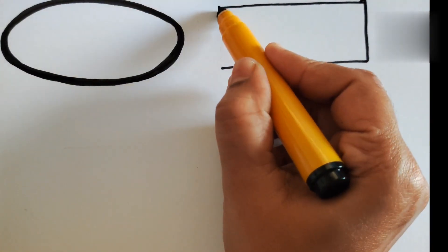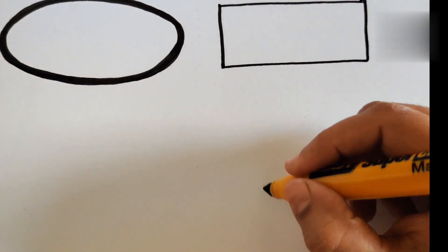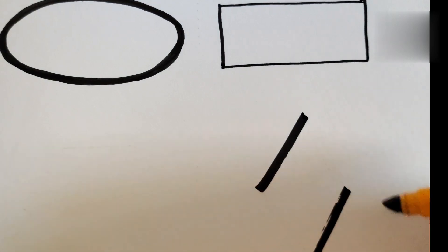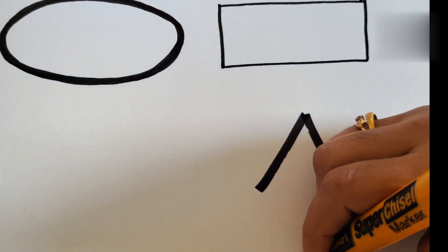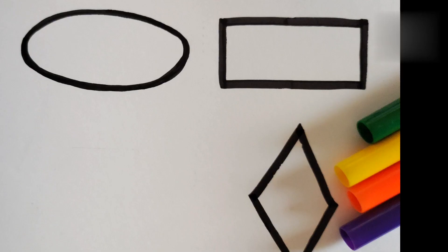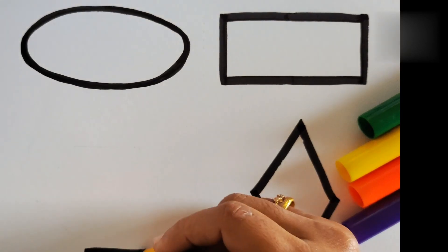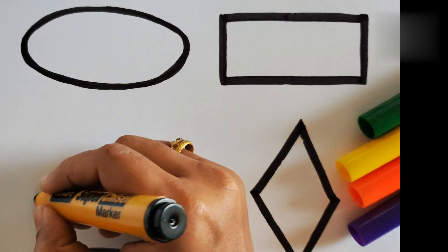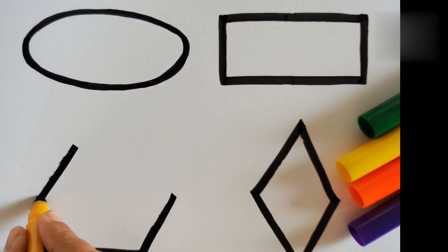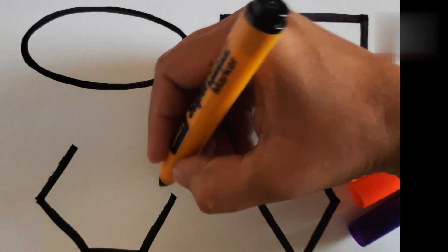Now let's draw rectangle, draw diamond shape, now let's draw pentagon shape. Wow, I am making pentagon shape.